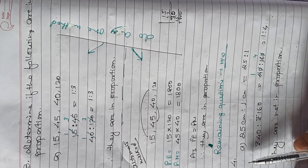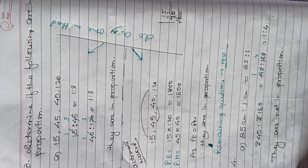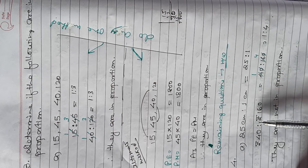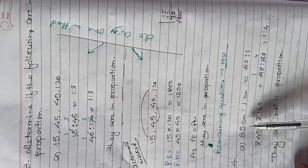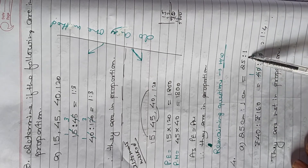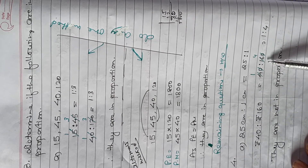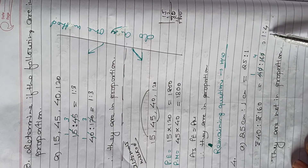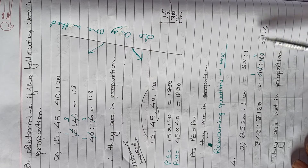Question 4: check if they are in proportion. If they are, show product of extremes and product of means; if not, no need to show. 25 centimeters to 1 centimeter gives ratio 25 is to 1, and 40 rupees to 160 rupees simplifies to 1 is to 4. These two ratios are different, so they are not in proportion.